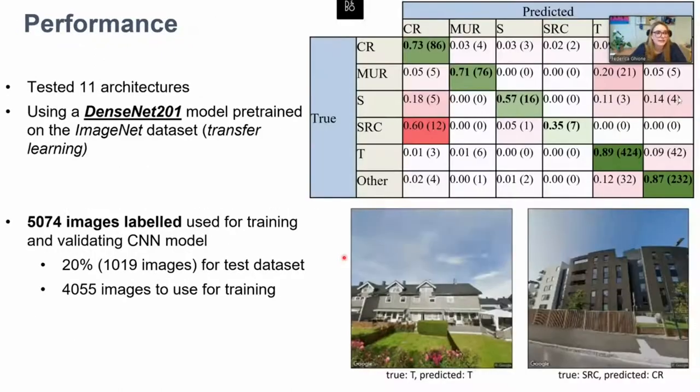Regarding the image recognition, we use a convolutional neural network to classify using a pre-trained model. The advantage of using a pre-trained model is that it is already available, and this can save time instead of starting to train from scratch. And also we apply transfer learning because we have adapted the previous model by retraining some parts with our images. In our case, we tested 11 architectures, and at the end we used the DenseNet 121 model, a pre-trained model on ImageNet dataset. 5,000 images were labeled, and 20% of those images were used for the test data set. Here on this plot, you can see the confusion matrix computed on the test data set.